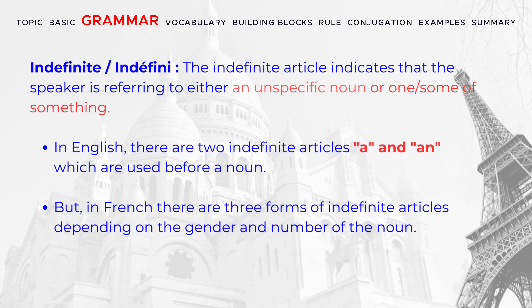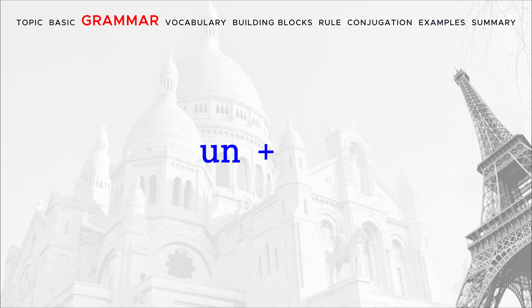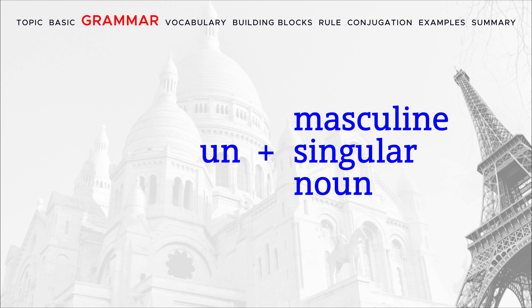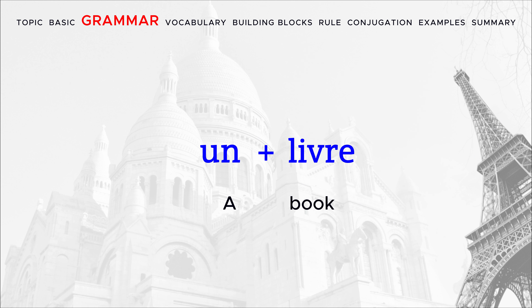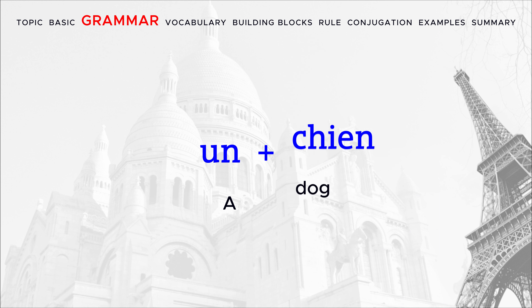But in French, there are three forms of indefinite articles, depending on the gender and number of the noun. The first form is 'Un,' used with the masculine singular noun. For example: Un livre, Un garçon, Un chien.